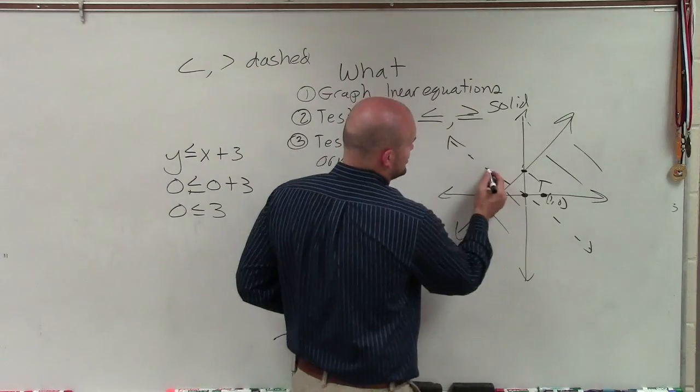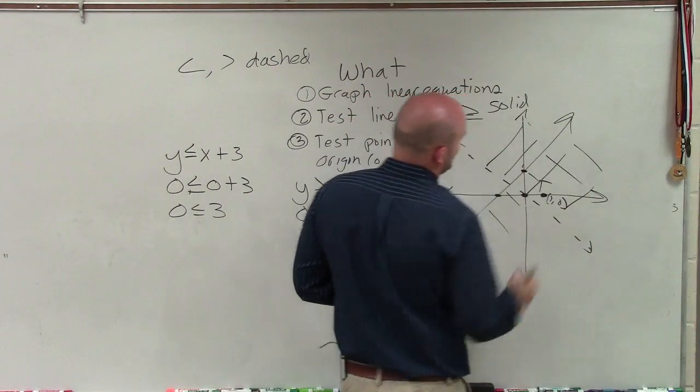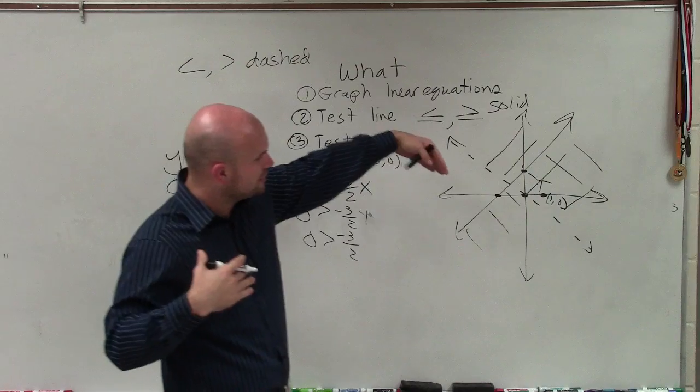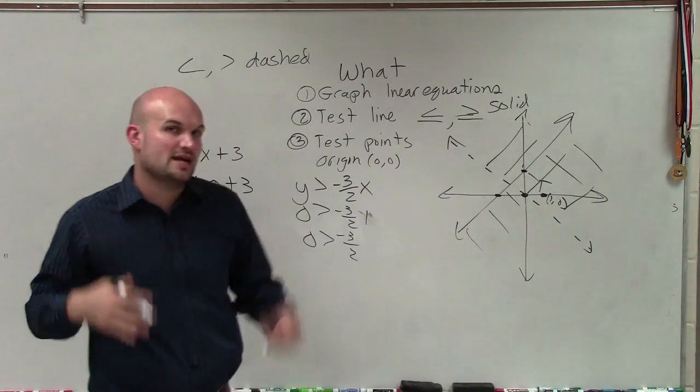So therefore, on this one, I would shade above the line. So wherever it's true, that's the side of the equation sign that you're going to shade. And if it's false, you're going to shade on the other side.